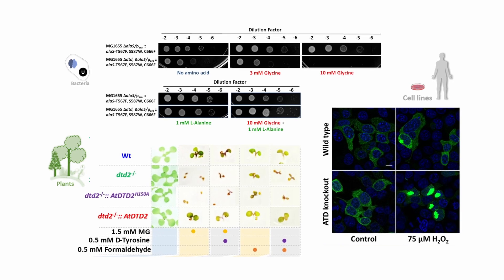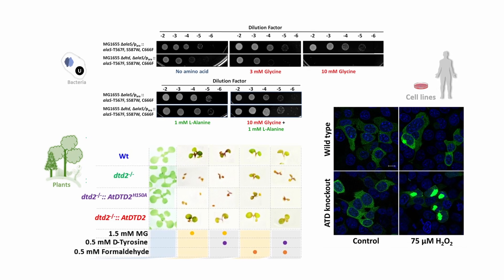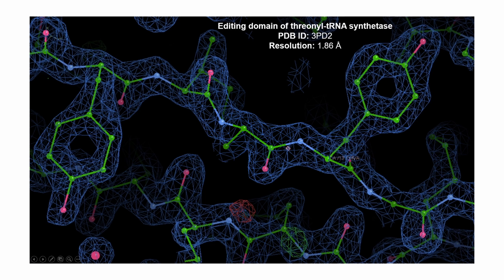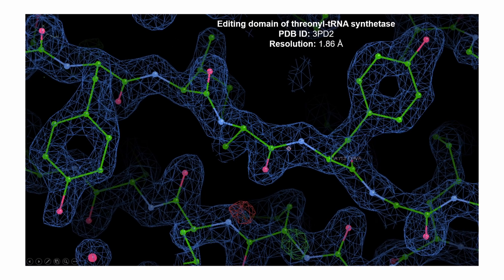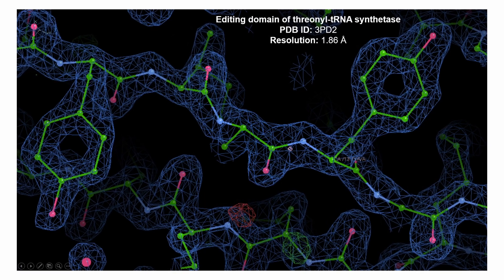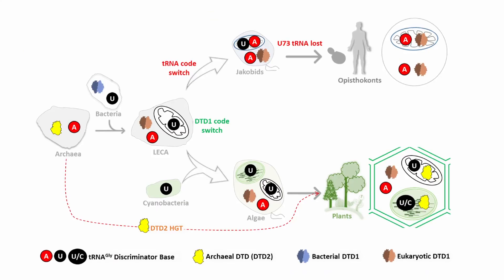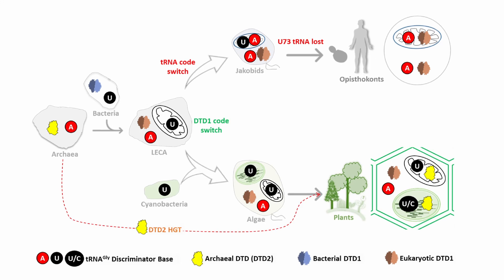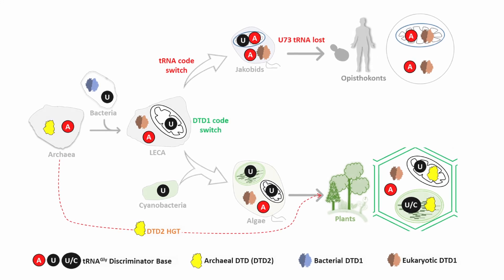At CSIR-CCMB, our work on proofreading is essential in understanding the precision and fidelity during protein synthesis at the molecular level, with implications for various fields of biology and biotechnology.